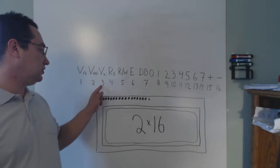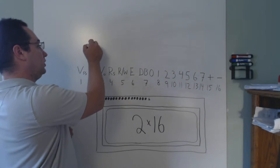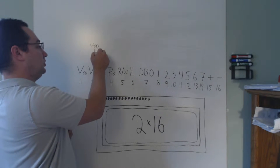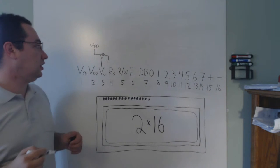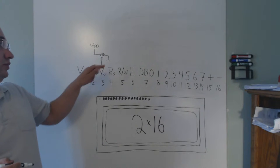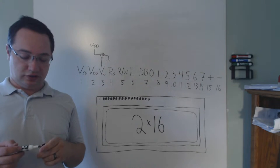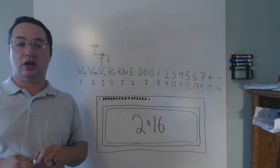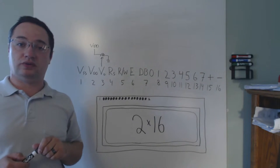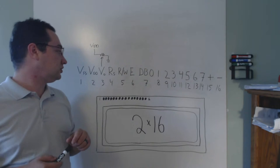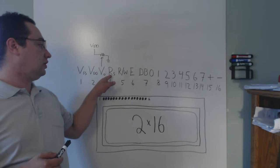The next pin is the V0 pin — this is the contrast pin for the screen. You wire this pin up with a potentiometer. The potentiometer goes between VDD and ground and connects to this pin, and by adjusting the potentiometer you can change the contrast of the screen. If you already know what contrast you want, you can just use fixed resistor values to set it.